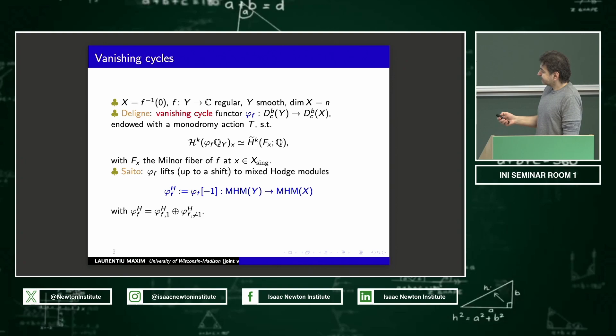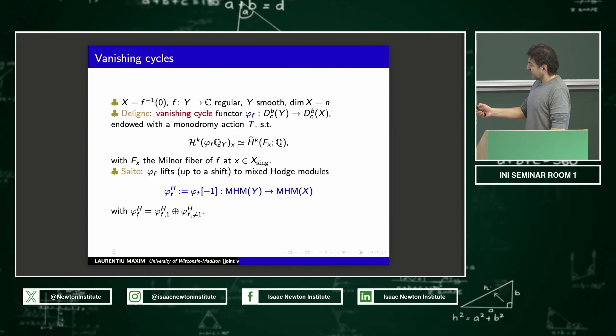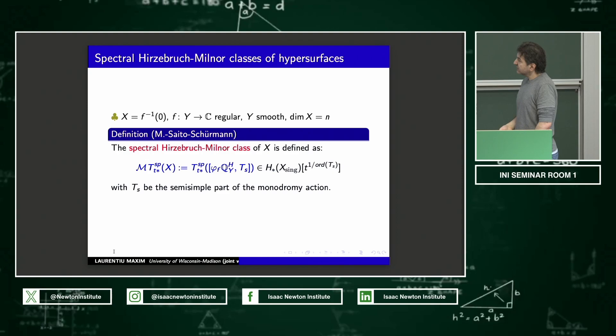And I can define it by this functor vanishing cycles of Deligne. Saito lifted his definition to mixed Hodge modules with the decomposition into unipotent and non-unipotent parts. But to get a lift to mixed Hodge modules, you need to shift. This is what's called the perverse shift. All right. So now, there is a very nice mixed Hodge module on the ambient smooth space that we all like, the constant sheaf, if you like, shifted by the dimension of the variety. I'm going to apply this complex to it and I end up with a mixed Hodge module here. But for what I care about, I want to shift it back so that the underlying sheaf or complex of sheaves is just the vanishing cycles like I wrote it here. All right. So here is the spectral Hirzebruch-Milnor class of the hypersurface. It's just the spectral class that I defined earlier applied to this complex of vanishing cycles with the semi-simple part of the monodromy as the finite order automorphism. It's supported on the singular set, has motivic features. It doesn't contain negative powers and so on.